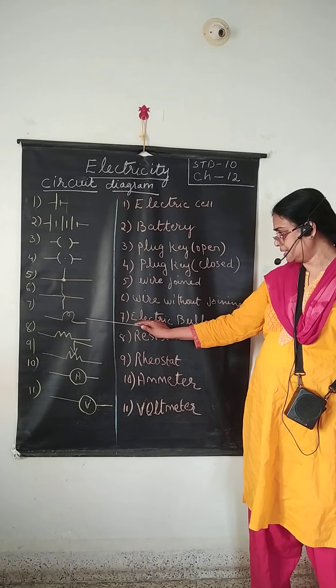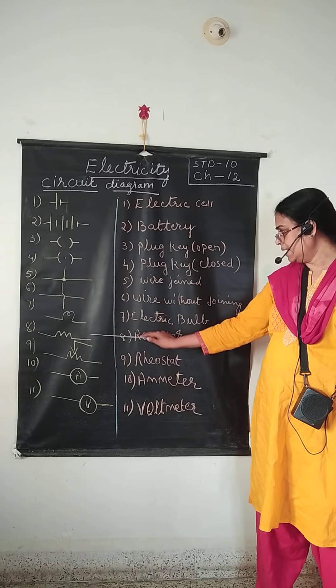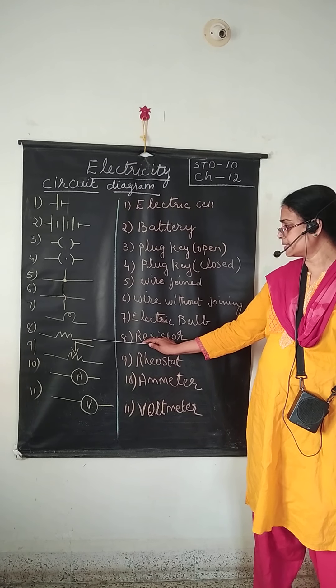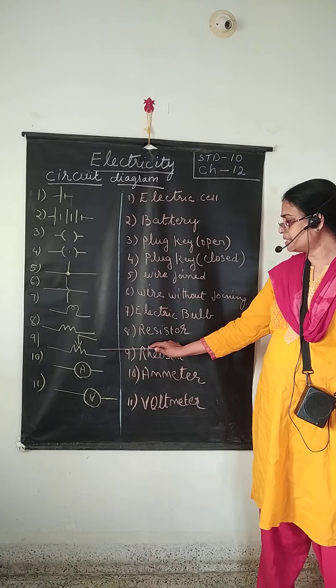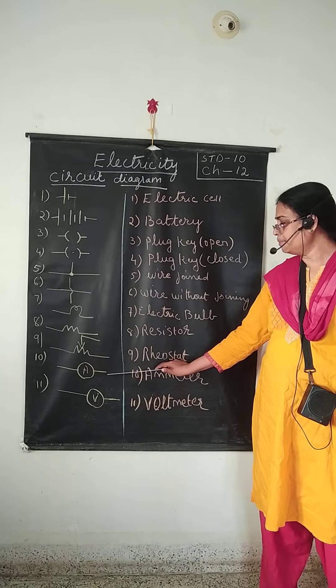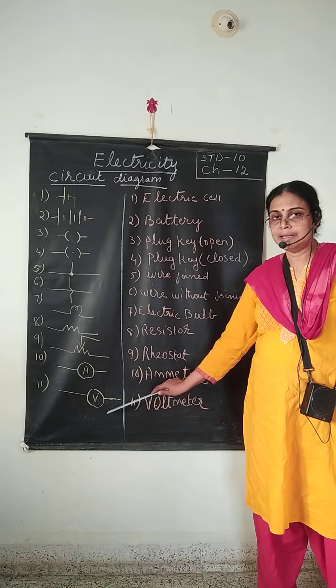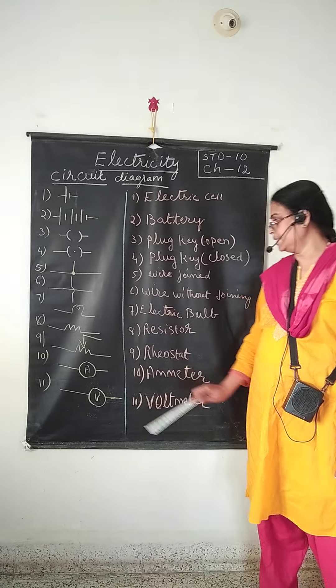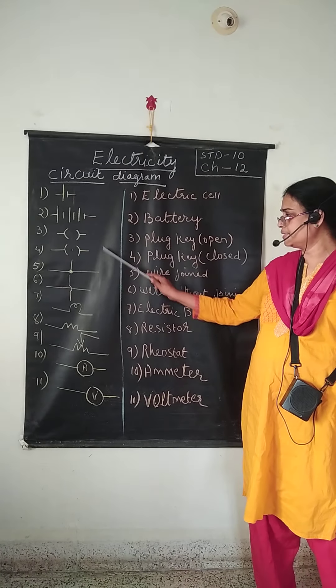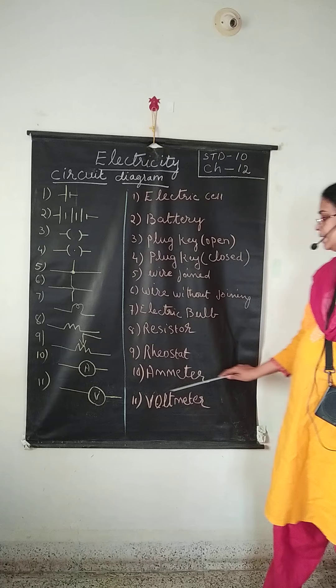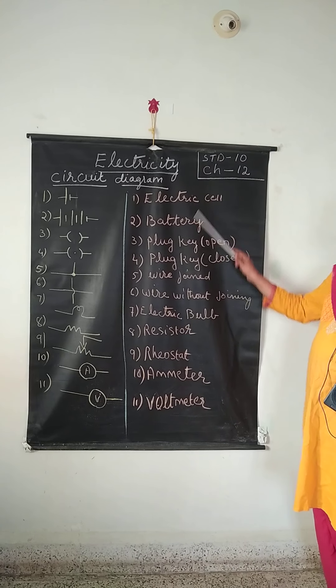Here you can see wire which is joined and wire without joining. The symbol looks like this. This is the electric bulb. This is called a resistor. Then rheostat, ammeter, and voltmeter. So these are the symbols used for the different components.